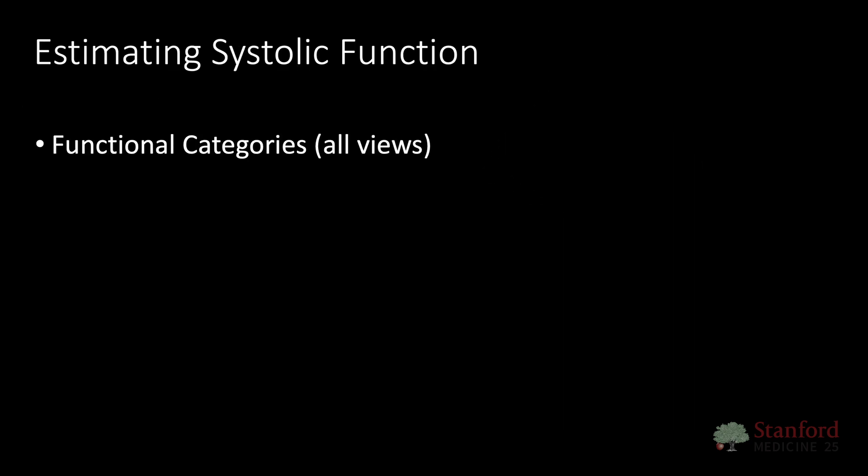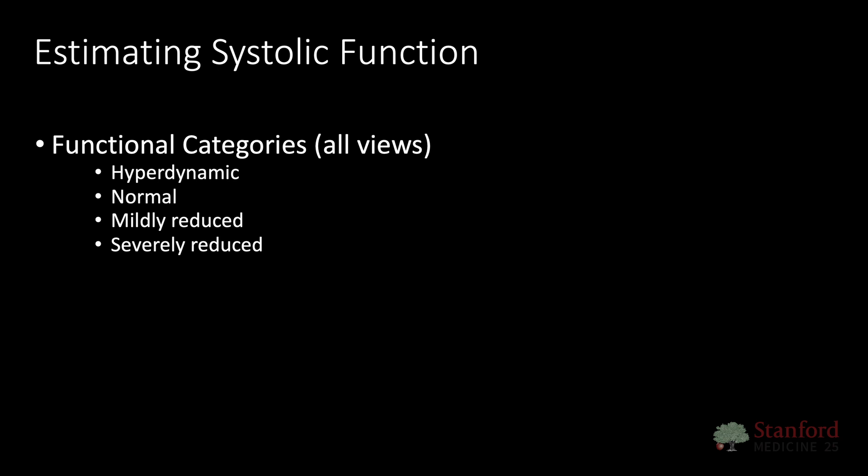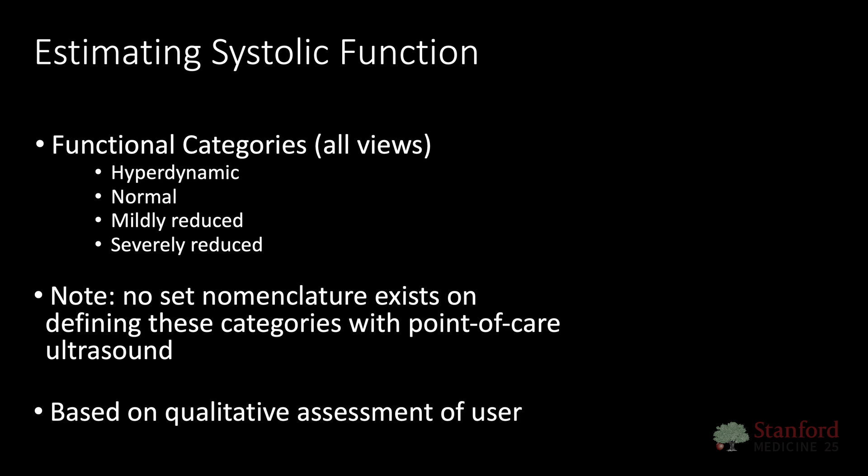There are several functional categories when estimating systolic function. Keep in mind that with point-of-care ultrasound, our goal is not to give you an exact number of ejection fraction — that's beyond the scope of POCUS and should be done with formal echocardiography. Nonetheless, you can qualitatively assess how a patient's systolic function is, using categories such as hyperdynamic, normal, mildly reduced, or severely reduced — but keep in mind these are qualitative in nature.